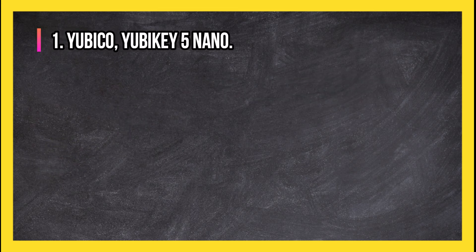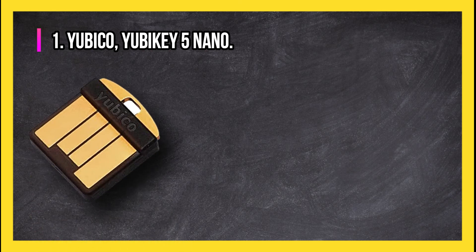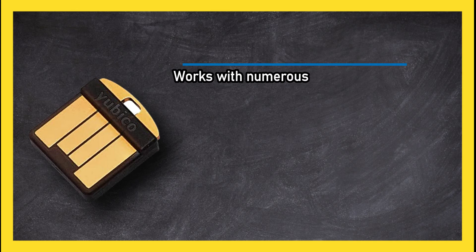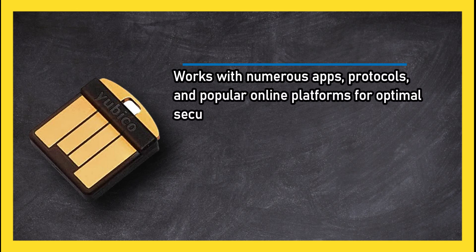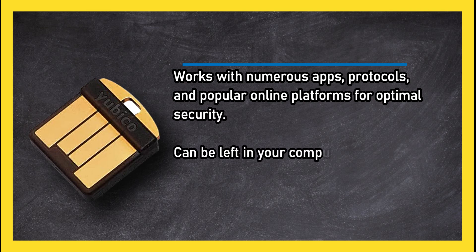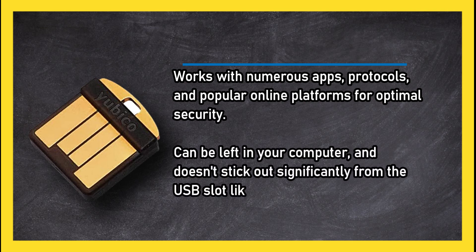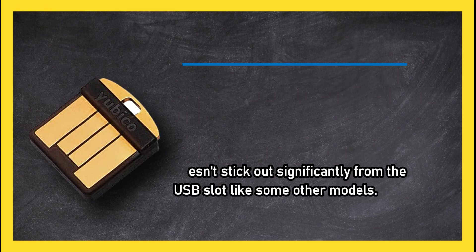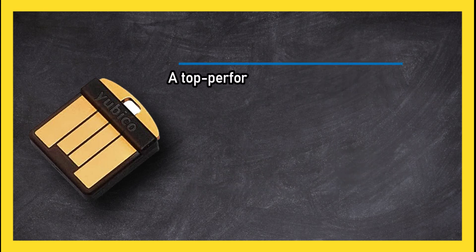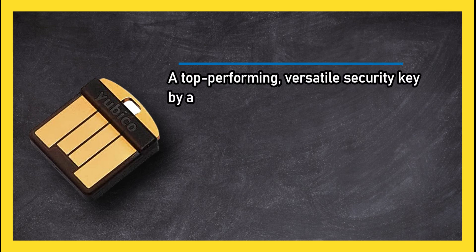At number one, Yubico Yubikey 5 Nano. Works with numerous apps, protocols, and popular online platforms for optimal security. Can be left in your computer and doesn't stick out significantly from the USB slot like some other models. A top performing, versatile security key by a trusted name in the industry.